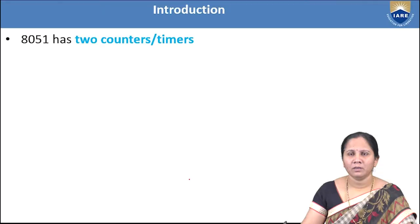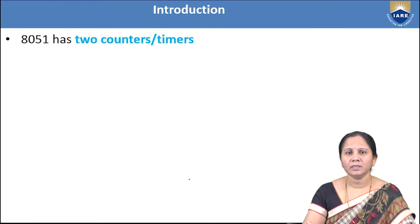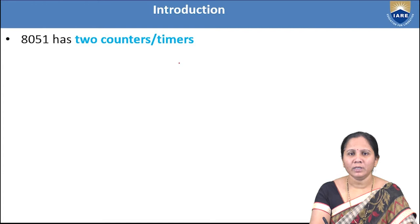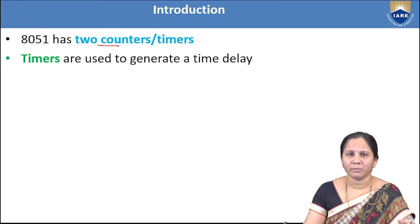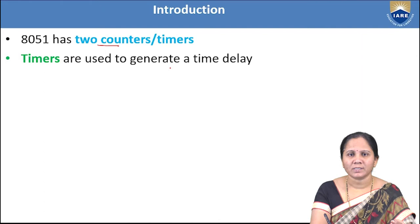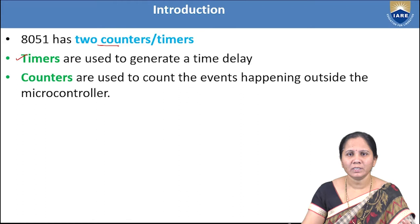Before going to the modes of timer operations, we should know some introduction regarding timers and counters. In 8051 microcontroller, it consists of two timers: Timer 0 and Timer 1. Both timers are 16-bit. Timers are used to generate time delay, whereas counters are used to count the number of events happening outside the microcontroller.